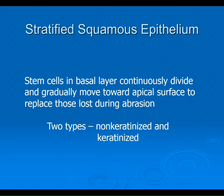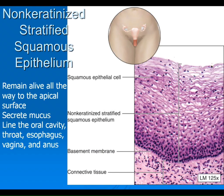For stratified squamous, there are two types: keratinized and non-keratinized. This image shows non-keratinized. How do you know? You can see nuclei at the very top edge of the tissue. If nuclei are there, the tissue is still alive and moist — found lining the oral cavity, esophagus, vagina, and anus. It's not found on your skin, because your skin is dead; those cells don't have a nucleus at the edge. That's really what you're looking for.